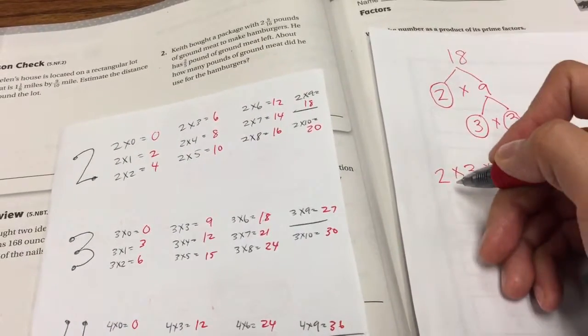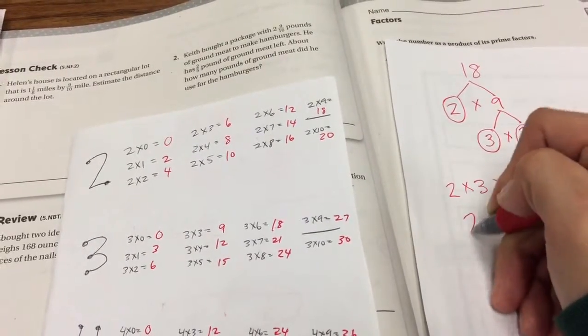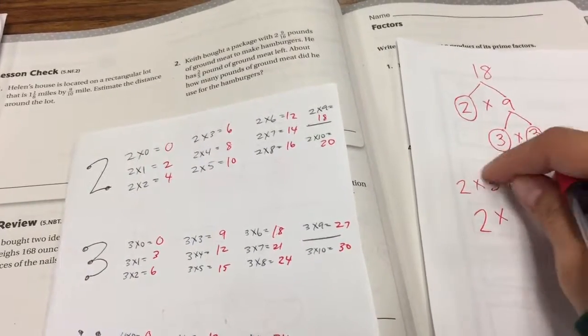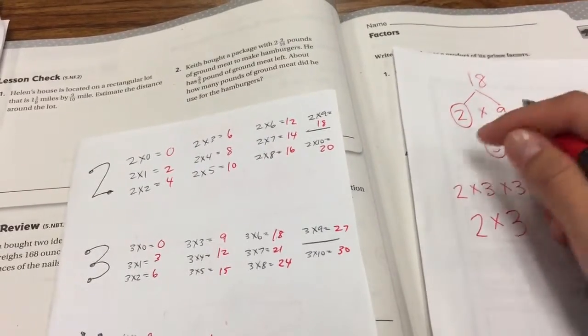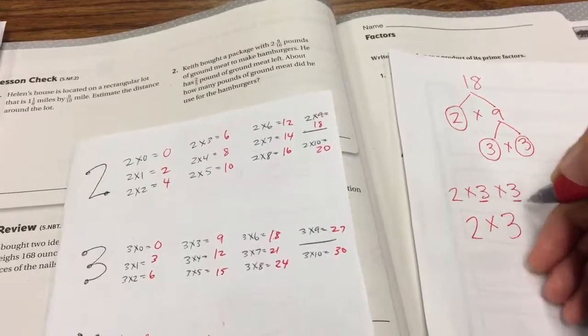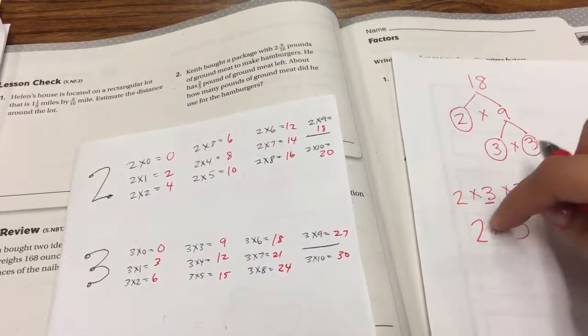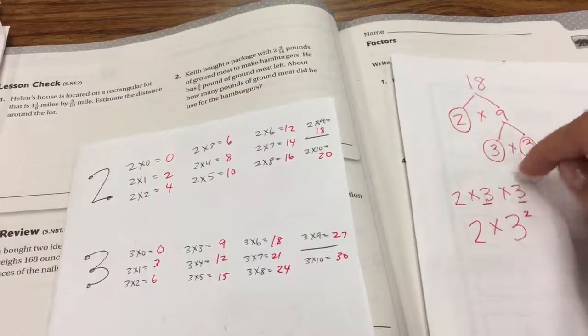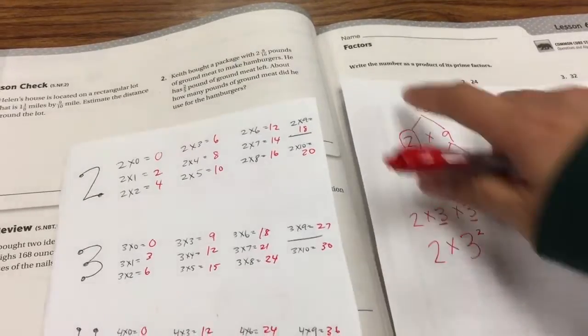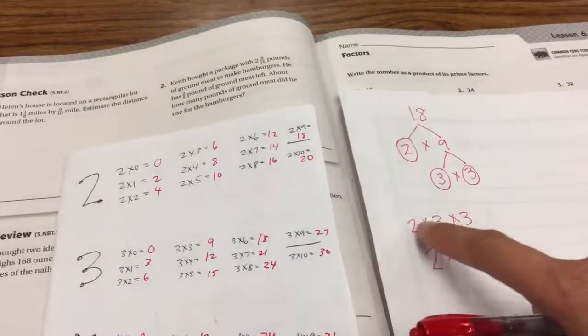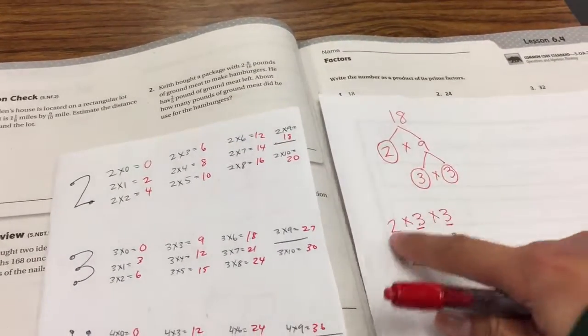And exponents are when there's a little number floating on the top. The way that exponents works is that if there's a number being repeated, you will have an exponent. So here, there's only one 2. So we're going to keep it at 2 times. And here, you can see you have 2 3s. And so I'm going to put a big 3 here, which is called the base number. This is the number we're repeating. And we're repeating 3 one, two times. So our exponent, the small number, is going to be a 2. So it's going to be 2 times 3 squared, or 2 times 3 to the second power, or 2 times 3 times 3. This is the number 18 as a product of its prime factors.